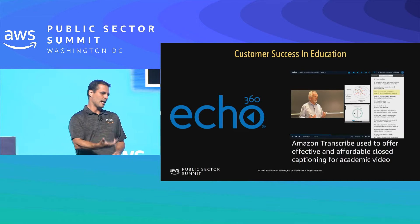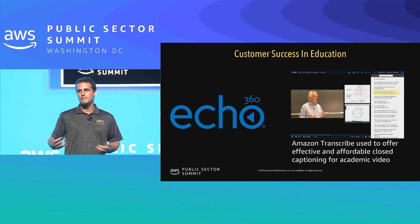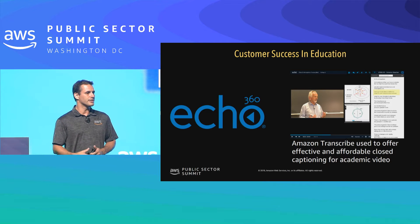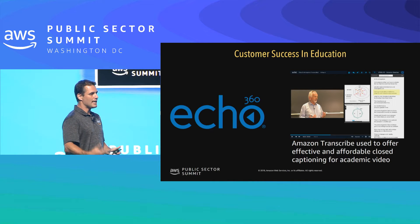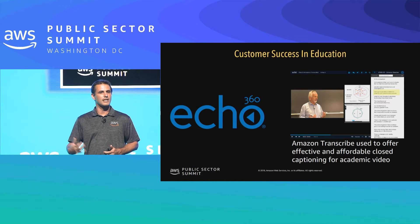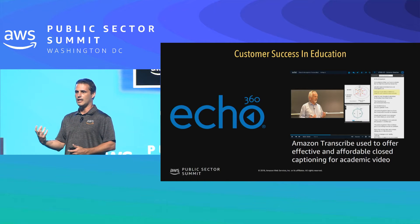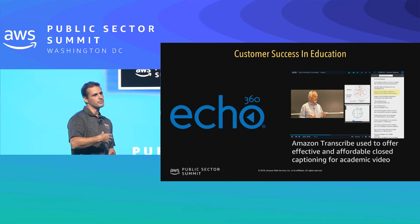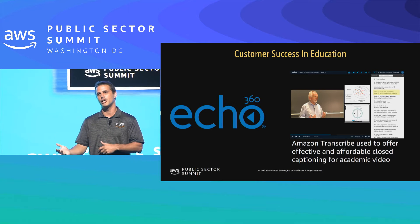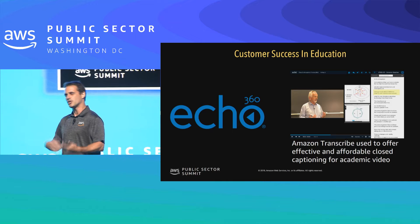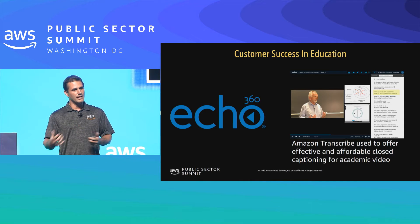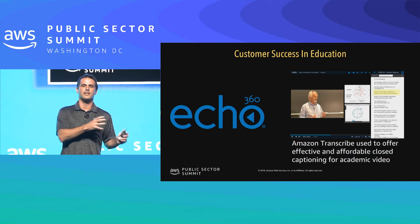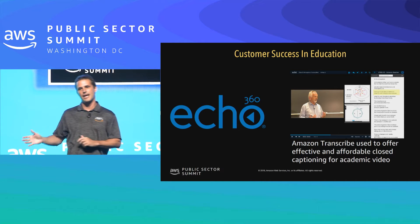One example is Echo 360 — they provide a video and active learning system for many higher ed institutions. They use machine transcription so that whenever professors give presentations, not only do they capture the slide being shown but they correlate it to what the professor is saying. This powers a content search system so students can search what's being said or shown, and also drives metadata letting professors know which areas students are revisiting most.